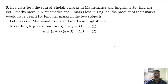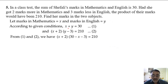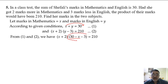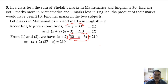Let these be equation number one and two. From equation one we can write y is equal to 30 minus x, and substitute in equation two in place of y. It will become (x + 2)(27 - x) = 210.